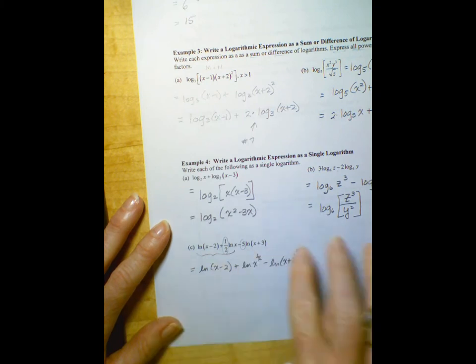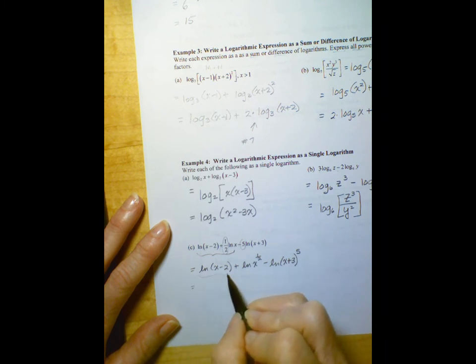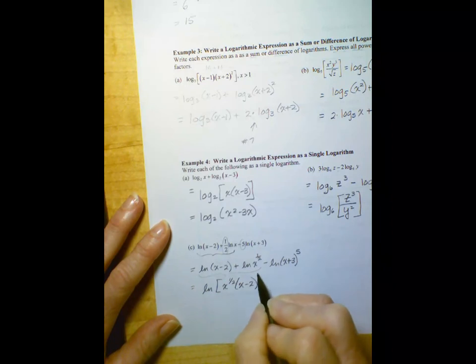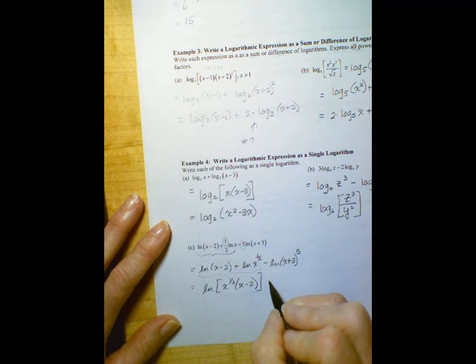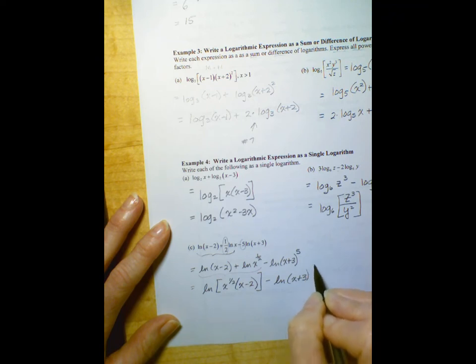So first, get all those factors out of the way. Now this will be a product. That's the natural log of x to the 1 half times x minus 2, or x minus 2 times x to the 1 half, however you want to do that, minus the natural log of x plus 3 to the 5th.